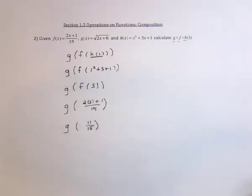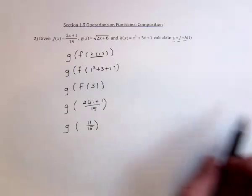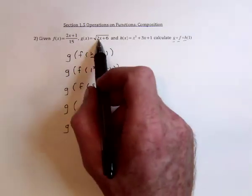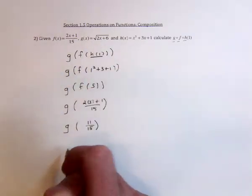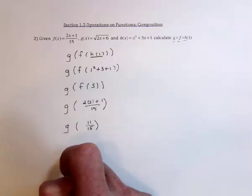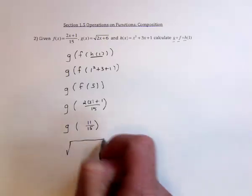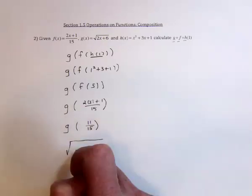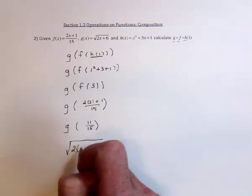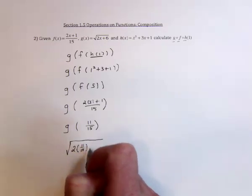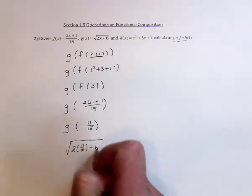And finally, take the 11 fifteenths and substitute it into the g function. So it's the square root of 2 times 11 fifteenths plus 6.